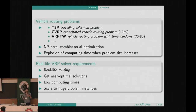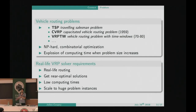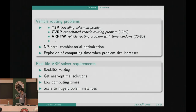One of the main points is that whatever approach you choose to solve those problems, there's always a point where computing time goes completely wild if the problem size increases. There are hundreds of articles on those subjects. We don't aim at writing a new paper for an academic purpose — we really want to have a production-ready solver. So we have a few requirements, like real-life routing. This might sound obvious, but usually papers don't actually treat the routing side.